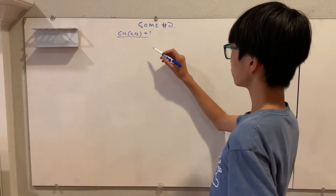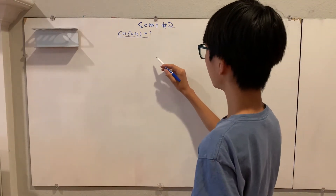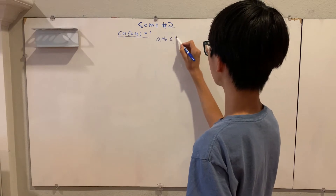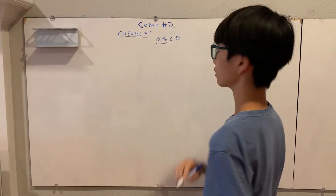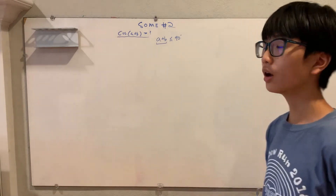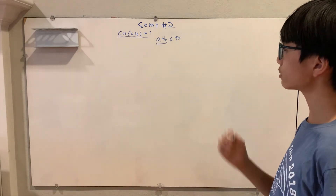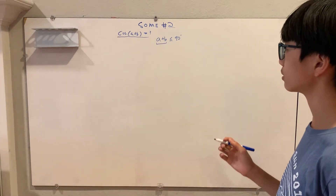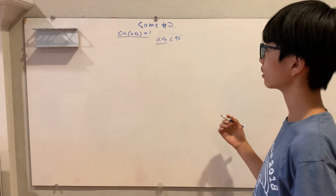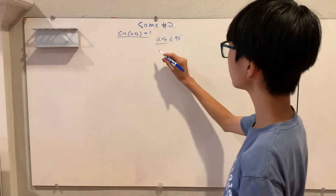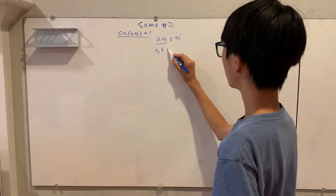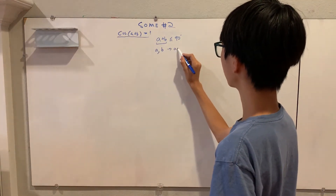To start off, I'm going to assume that a plus b is less than or equal to 90 degrees — that this a plus b angle is still acute — and I will generalize it to every possible set of angles a and b later on. Additionally, we're going to assume that a and b are both acute angles.